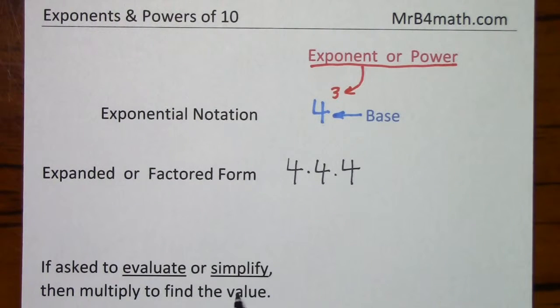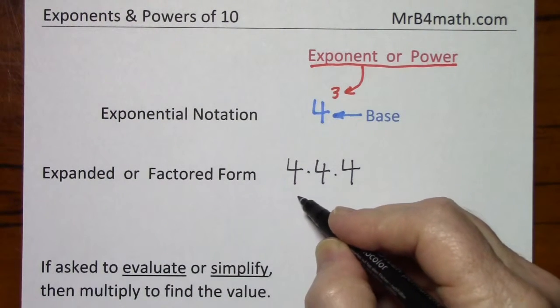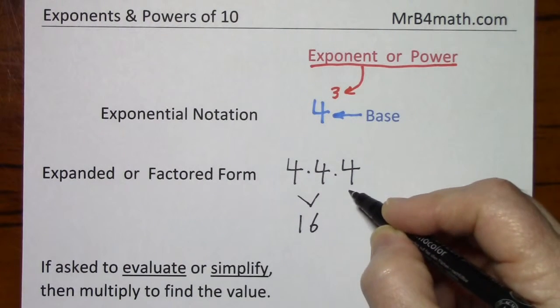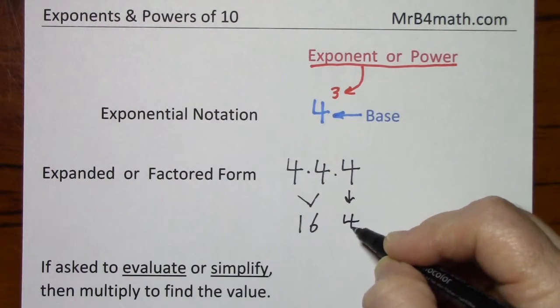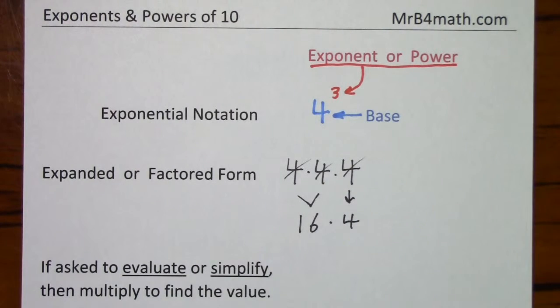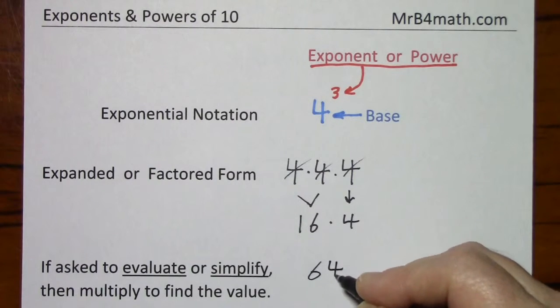If you're asked to evaluate or simplify, then you simply multiply to find the value. So 4 times 4 gives you 16. Bring down this next digit. Sometimes I cross these out as I use them. 16 times 4 is 64.